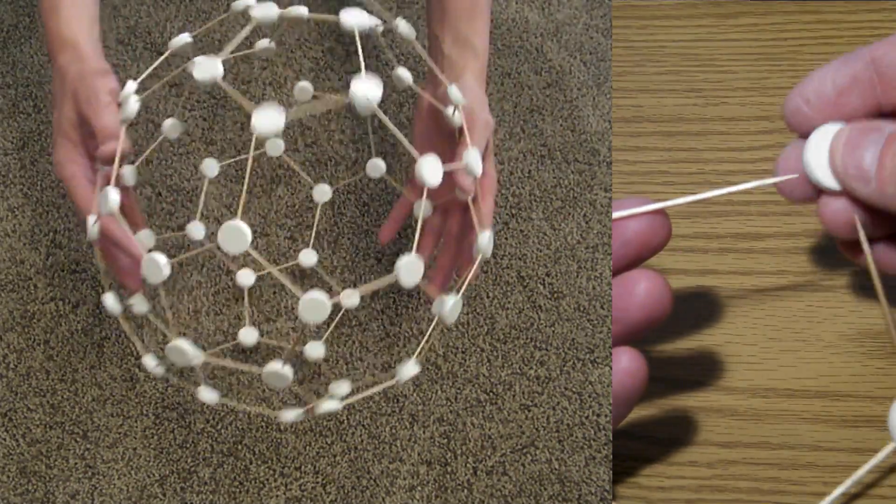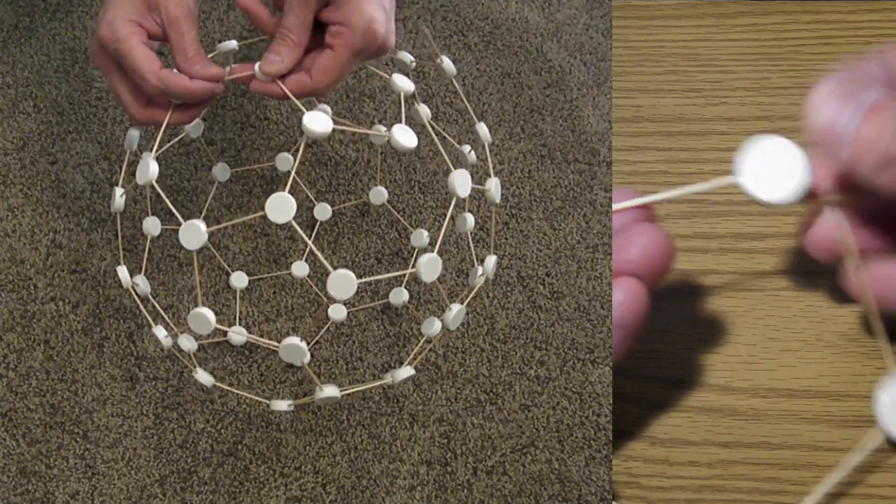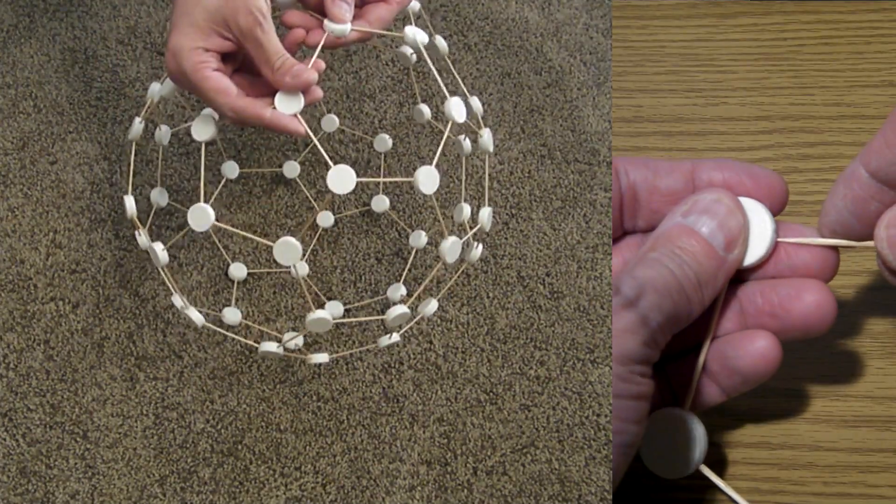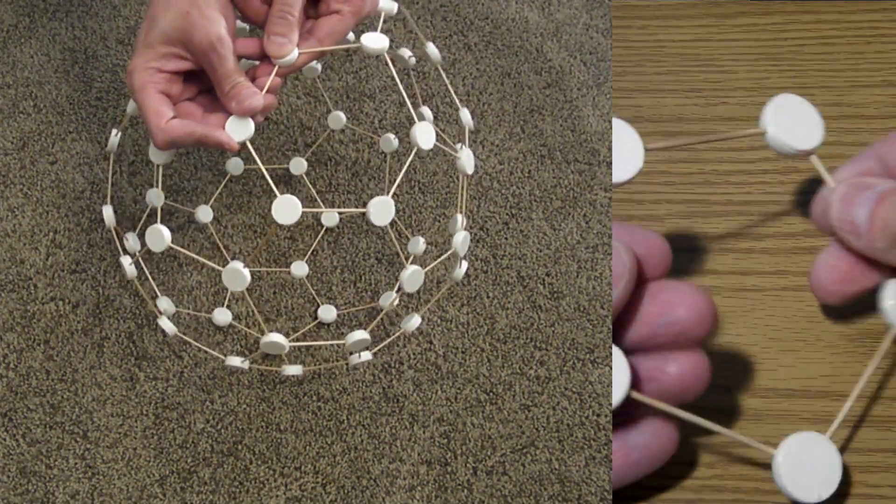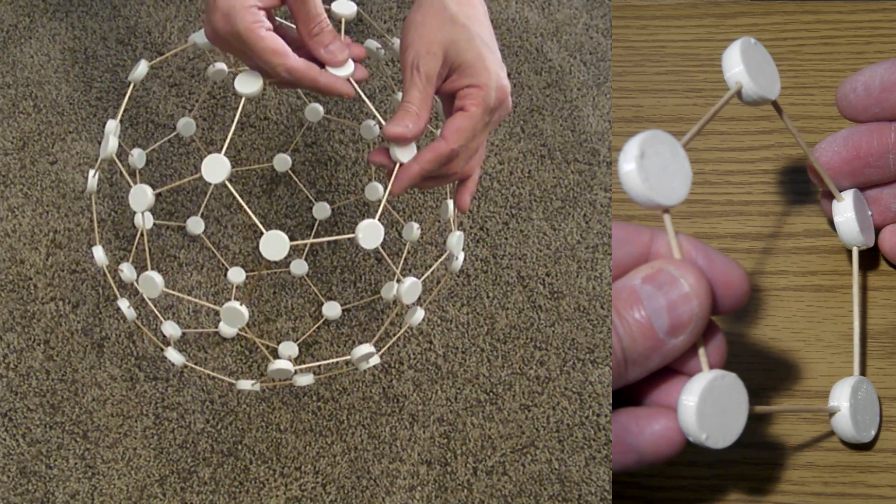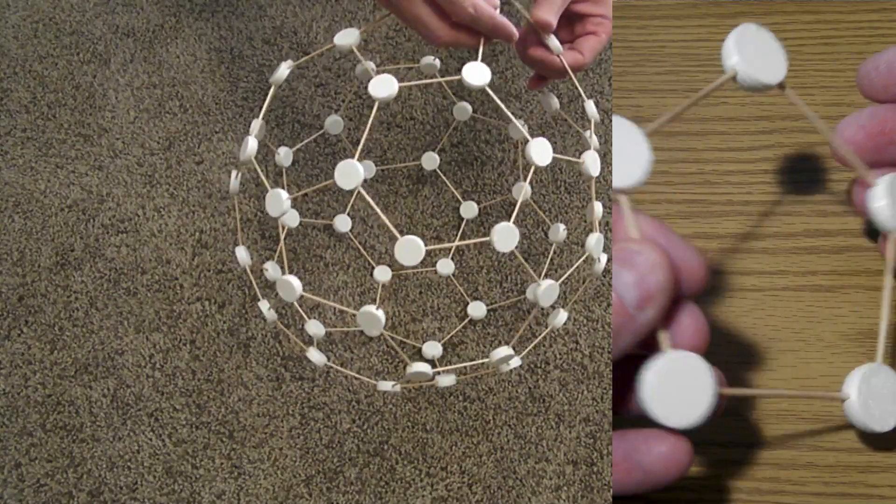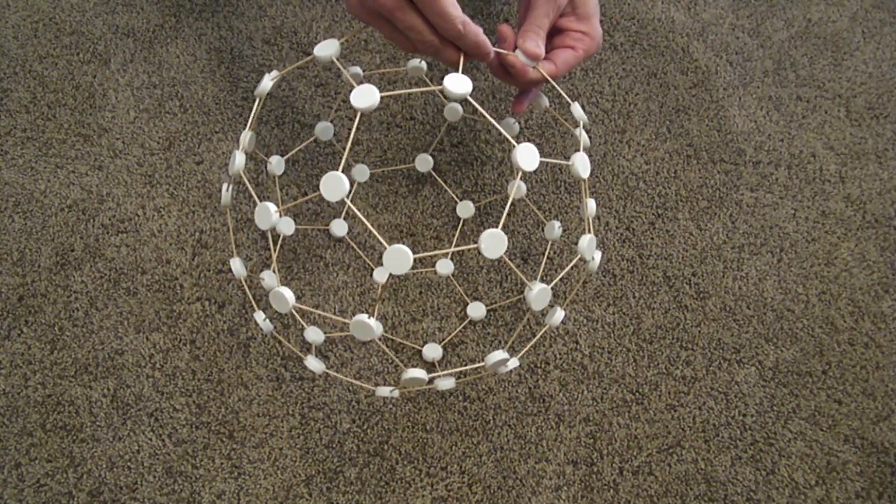There won't have to be any additional disassembly or reassembly, you'll just connect all those pentagons together, and that will create the truncated icosahedron.